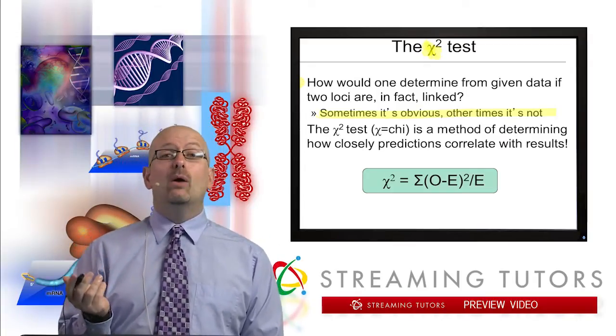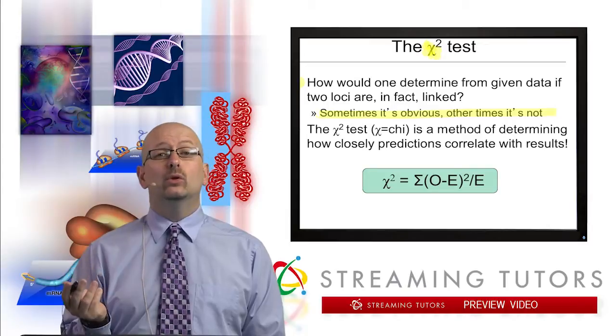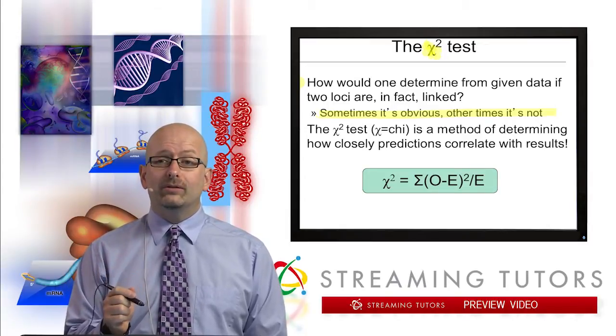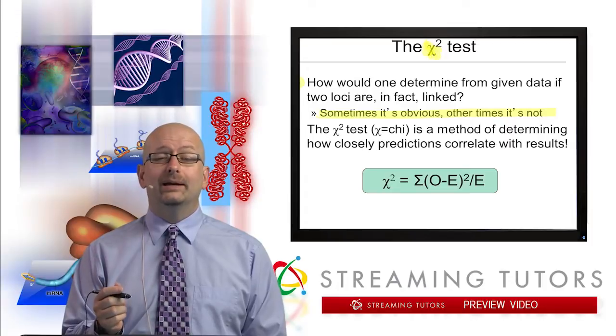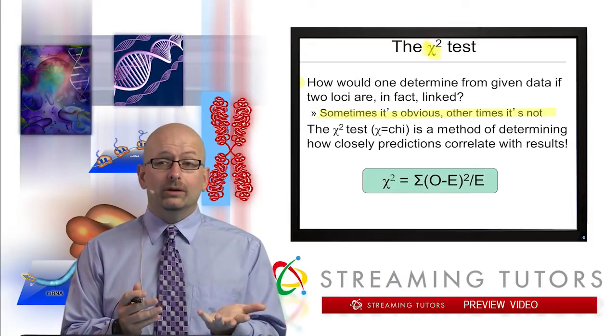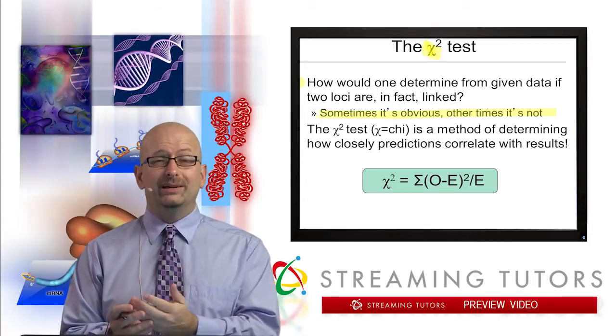So the question we're asking here is, given data, how would one determine if two loci are in fact linked? So the chi-square test is one method of determining how closely predictions correlate with results.